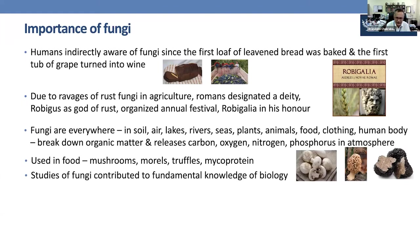People came to understand that fungi are found everywhere — not only in agriculture, but in soil, air, lakes, rivers, seas, plants, animals, food, clothing, and on the human body. Fungi also break down organic matter, releasing carbon, oxygen, nitrogen, and phosphorus into the atmosphere, which benefits humans.